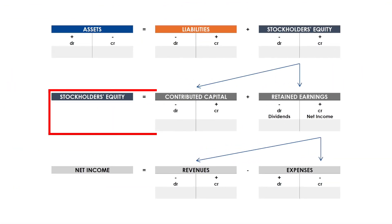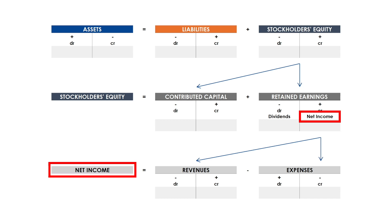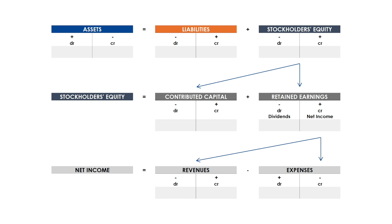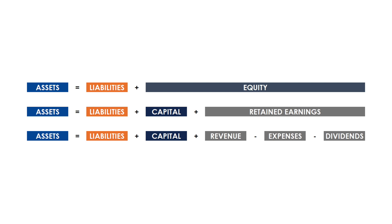This equation can be expanded to show that stockholders' equity is equal to contributed capital plus retained earnings, and that net income is equal to revenue less expenses. We will revisit the expanded accounting equation in future lessons. One detail to note is that under expenses, the impact of a debit and credit is reversed — this is a common interview question. The expanded accounting equation can also be reformatted and expressed in an alternative sequence. You can view all of these visuals by downloading the notes, and we will be revisiting this expanded equation throughout the lessons that follow.